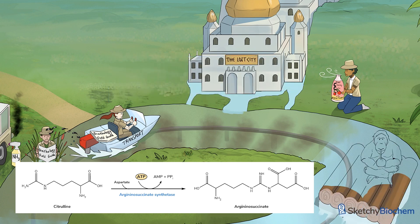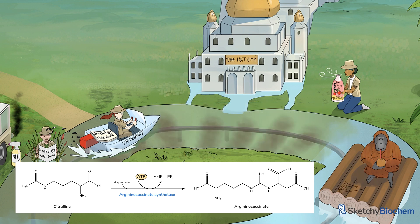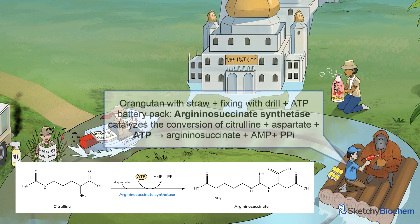Think of it as an orangutan sucking through a straw — arginosuccinate. You'll see another park worker using a power drill to fix our coconut-loving orangutan. That's arginosuccinate synthetase. Like CPS-1, this step also requires ATP.